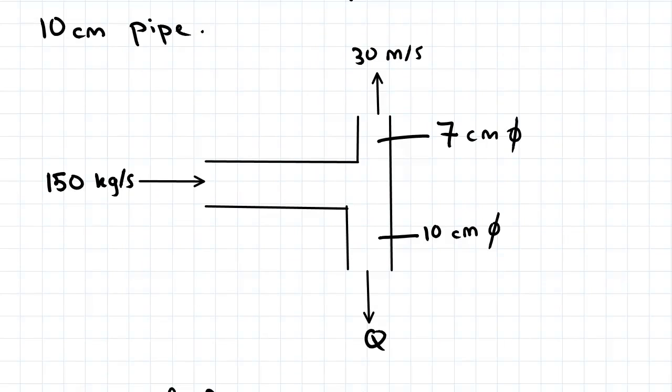So here's our T-junction, 7 centimeter pipe at the top. We've got our inflow of 150 kilograms per second. We've been asked to find Q, which is the outflow at the 10 centimeter diameter pipe.